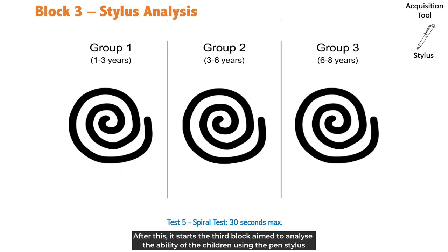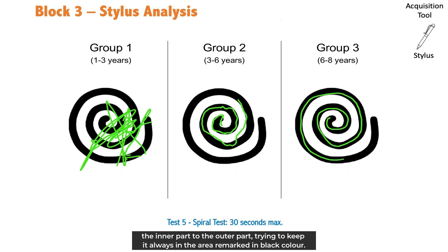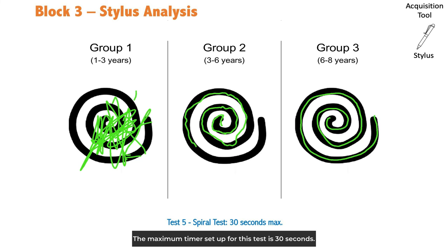After this, it starts the third block aimed to analyze the ability of the children using the pen stylus by means of two different tests. In the first test of the third block, the goal is to go across the spiral from the inner part to the outer part, trying to keep it always in the area remarked in black color. The maximum timer set up for this test is 30 seconds.